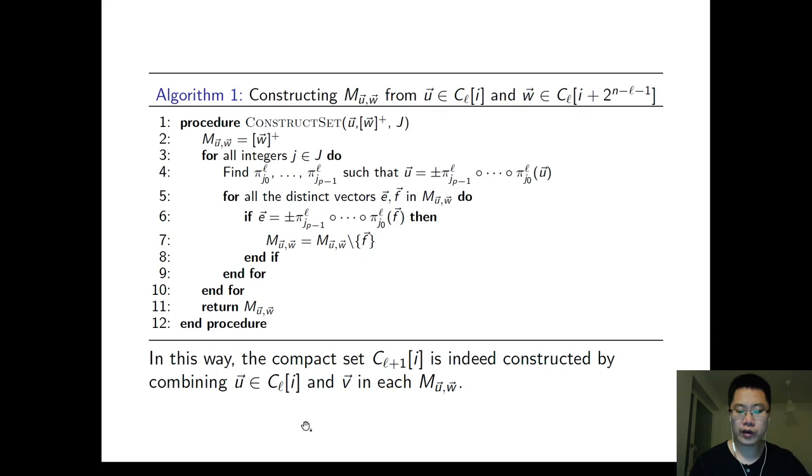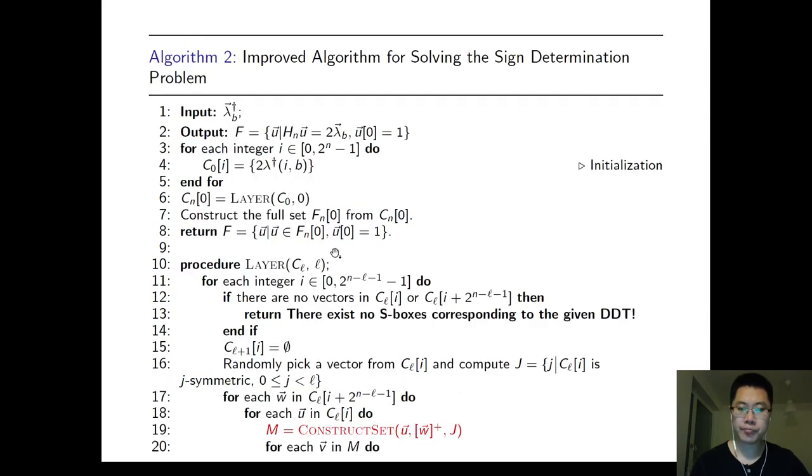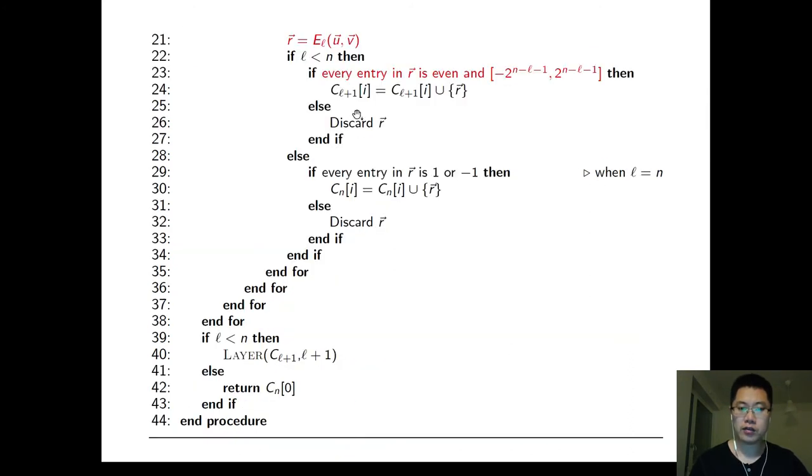Every time we derive the compact set in the next layer, we construct a middle set to guarantee that the derived set is indeed the compact set. Here is our improved algorithm. We compute the middle set and we compute the new vector and check the consistency of the vector. If it satisfies the consistency, we include the new vector in the new compact set.